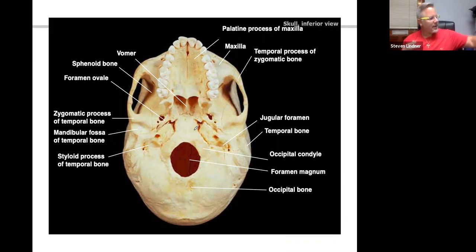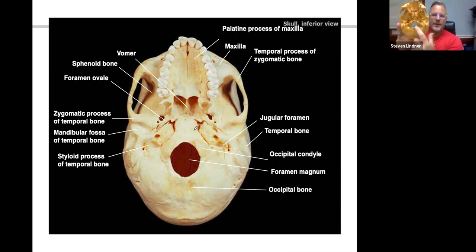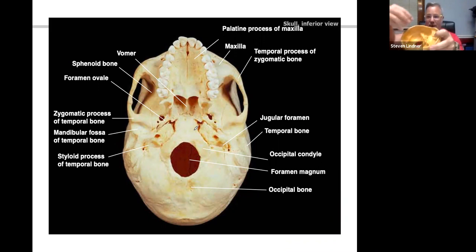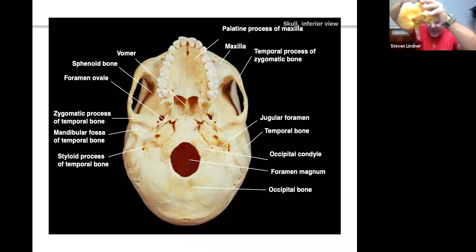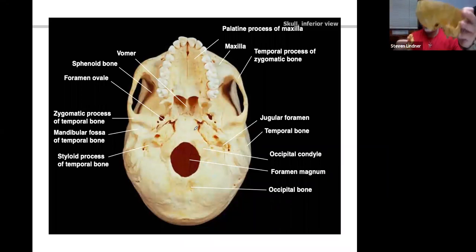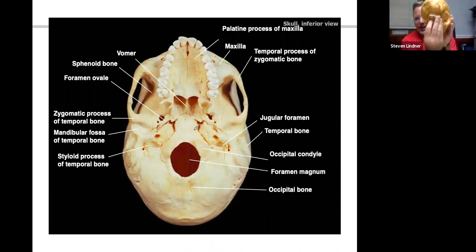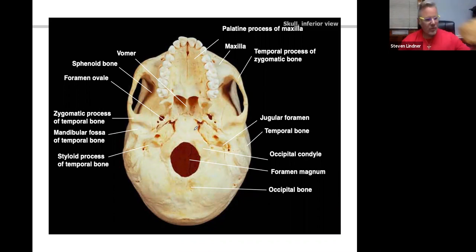Looking at the underneath surface of the skull — this large hole is the foramen magnum. The brain stem comes through there, and C1 vertebra is going to articulate with it. Just next to the foramen magnum are the occipital condyles.